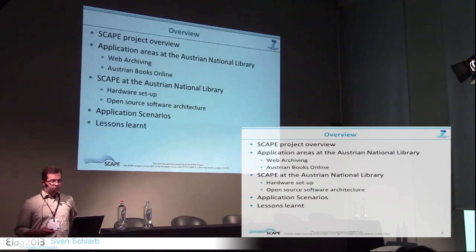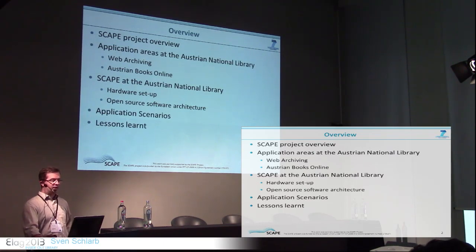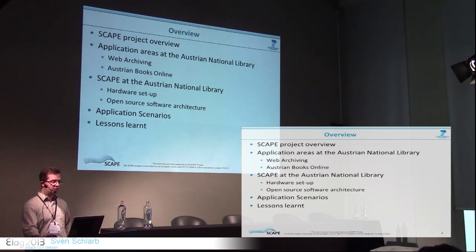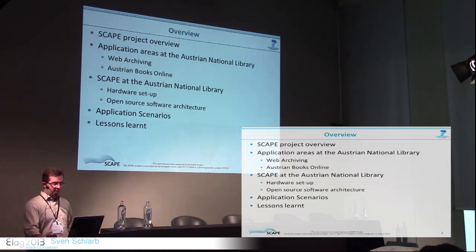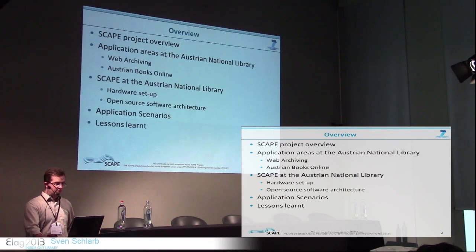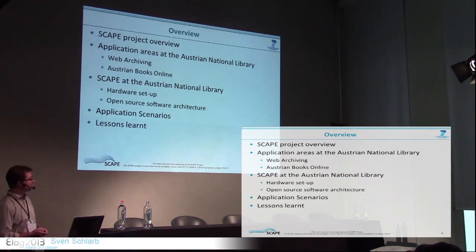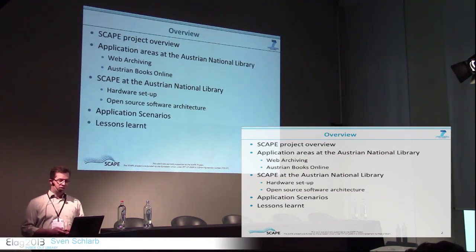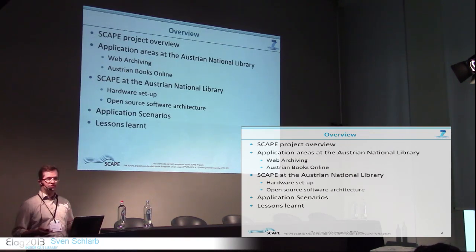A short overview: I will give an overview of the SCAPE project. I will show application areas that we have at the Austrian National Library, especially web archiving and the Austrian Books Online project. I will then show the environment we set up — the hardware setup and the open source software architecture — and a few application scenarios and the lessons learned from them.